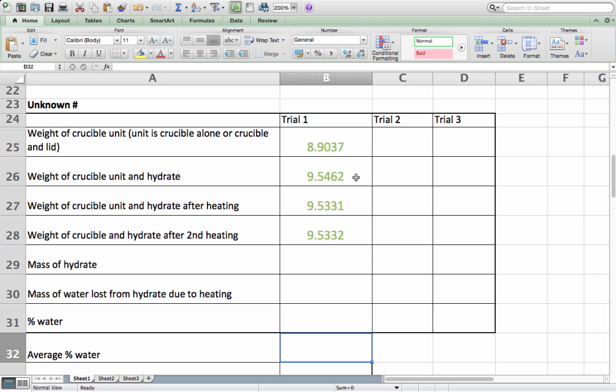Next is the mass of my crucible and hydrate after the first heating, and then after the second heating. You will see that there is just a small difference in the last decimal place. And so I can conclude that I have achieved constant weight. To calculate the mass of my hydrate, I would simply subtract the mass of the crucible from the mass of the crucible and the hydrate. So, mass of the crucible and the hydrate minus mass of the crucible. My hydrate weighs 0.6425 grams.